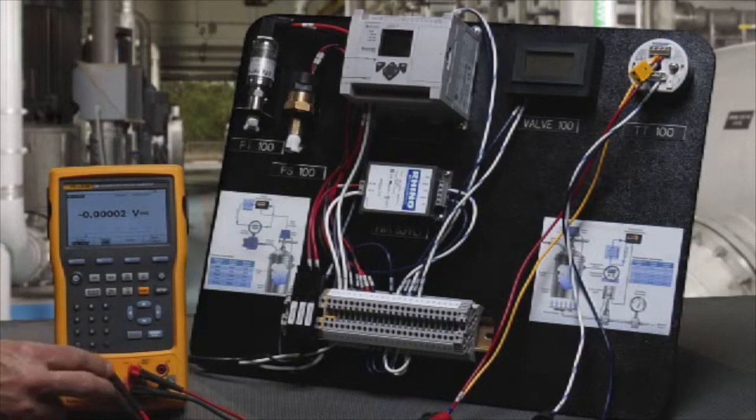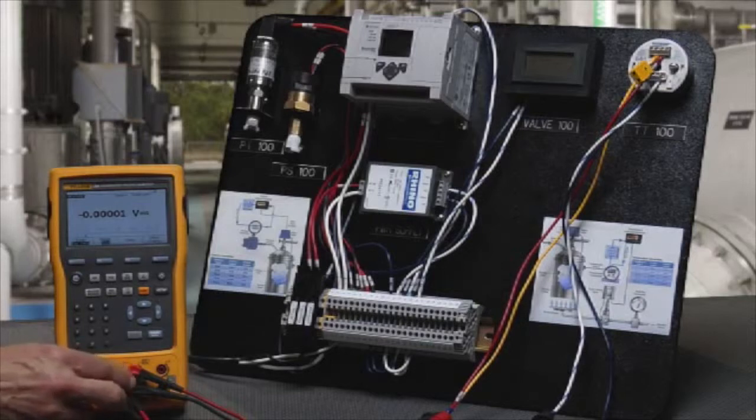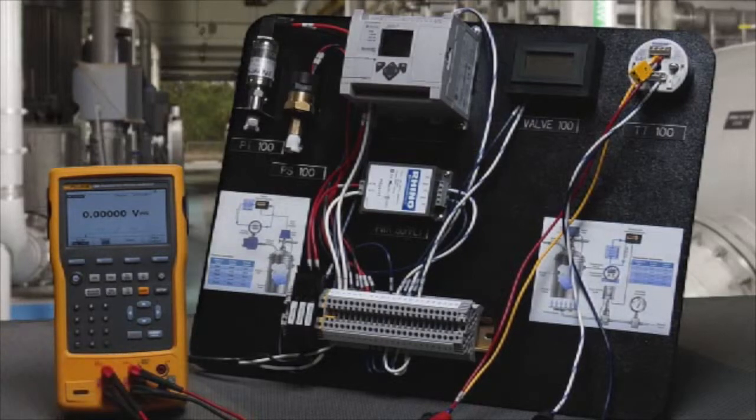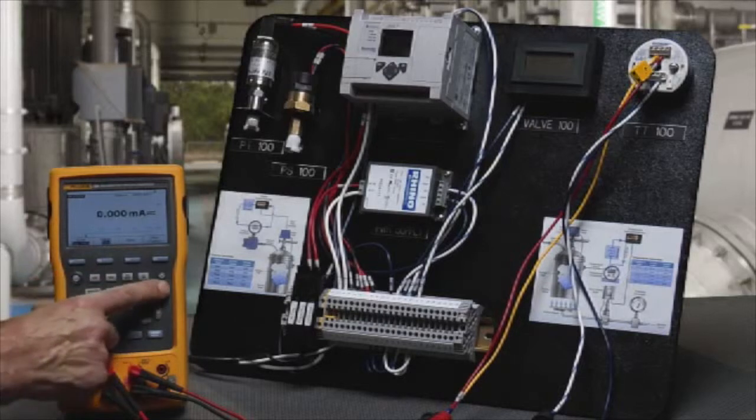We're going to simulate an RTD input into the transmitter while simultaneously measuring the milliamp output signal. To initiate the test, select measure milliamps and turn on loop power.